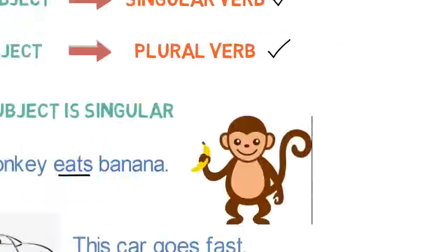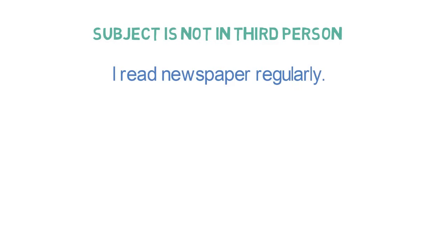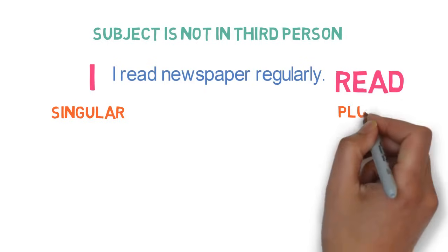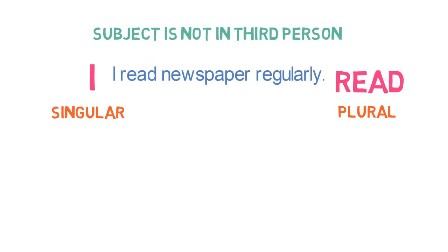Now, let's look into examples where subject is not in third person. I read newspaper regularly. Here, I is singular. But, verb read is in plural form. Let's look into one more example. We read newspaper regularly. Here, we is in plural form and verb read is also in plural form.